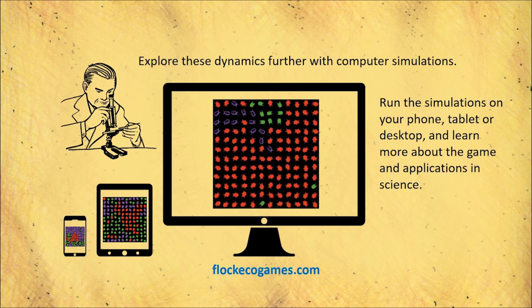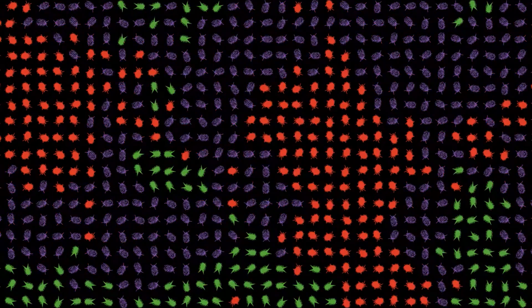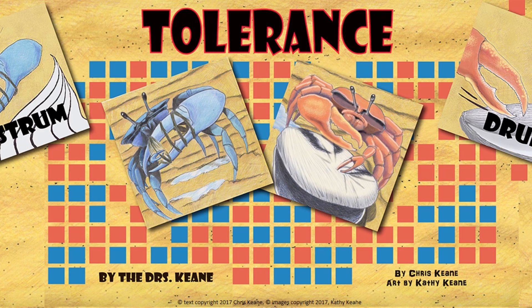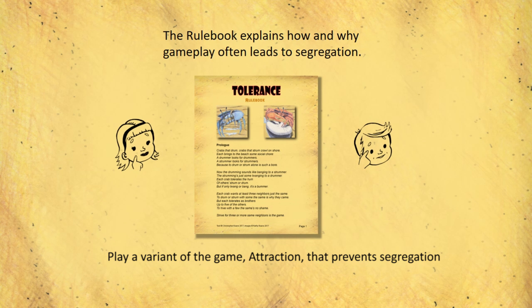They can coexist. The computer simulations are very easy to run on the web — they make it easy to see the patterns of coexistence that occur. Tolerance is a really fun and beautiful-looking game that shows segregation emerging even when the players are relatively tolerant.